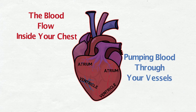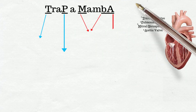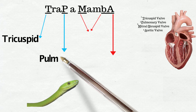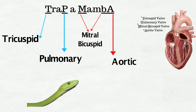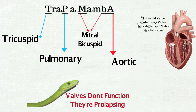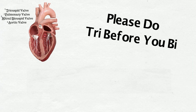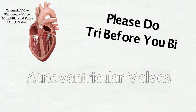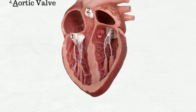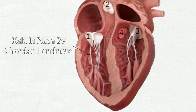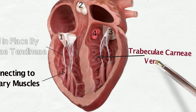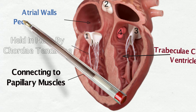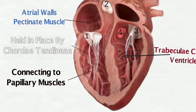For the valves: tricuspid valve, pulmonary valve, bicuspid valve, and aortic valve. Valves function, preventing backflow — atrioventricular valves held in place by chordae tendineae, connecting to papillary muscles to regulate cardiac ventricles. Atrial walls packed in cardiac muscles, different location but the same hustle.